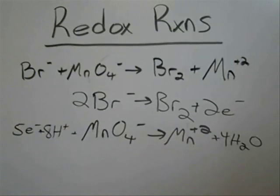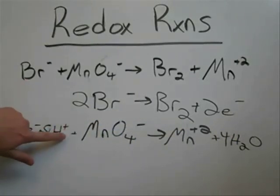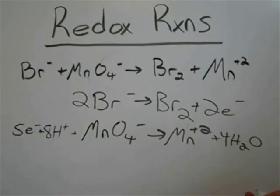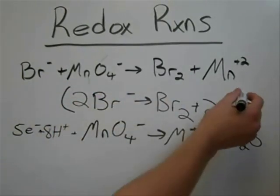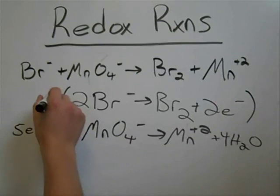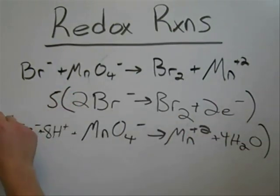Now we have our two half reactions. And what we have to do is make sure that the amount of electrons in this half reaction equals the amount of electrons in this half reaction. And how we're going to do that is just simply find the lowest common multiple, which five and two, it's going to be ten. So we multiply this whole top reaction by five, and this whole bottom reaction by two.